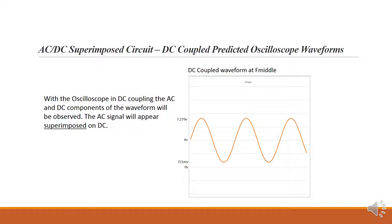If we switch the oscilloscope to DC coupling, we pick up the DC component — that 4 volts DC. The AC waveform is superimposed on the DC, so we would expect to see the waveform offset and centered around the 4 volts DC.